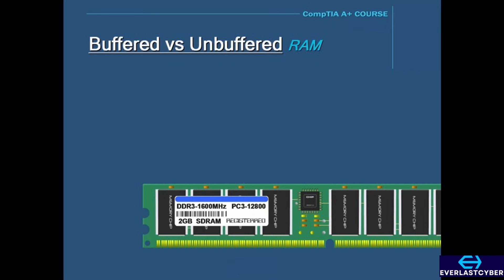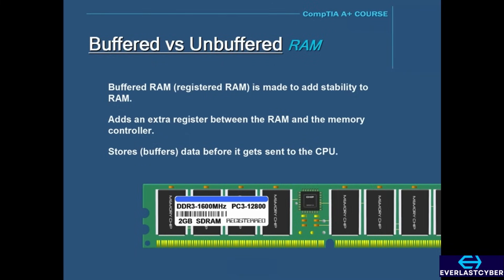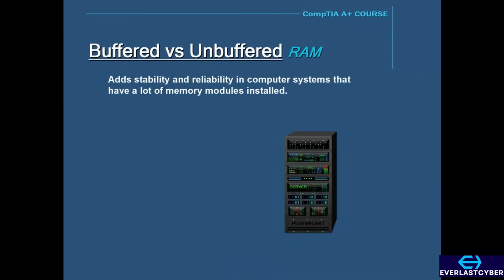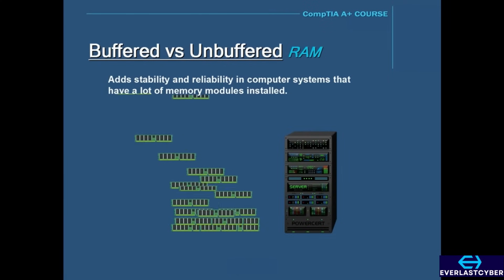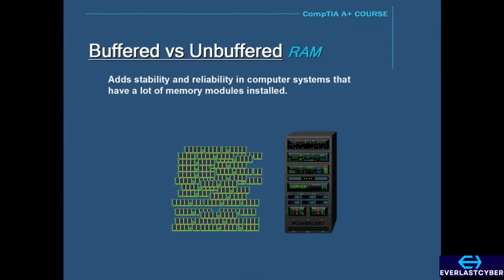There is also buffered and unbuffered RAM. Buffered RAM, which is also called registered RAM, is made to add stability to RAM. It adds an extra register between the RAM and the memory controller. It stores or buffers data before it gets sent to the CPU, and this adds stability and reliability to computer systems that have a lot of memory modules installed. It is basically used to lessen the electrical load on your memory controller when using a lot of memory modules, for example in servers.